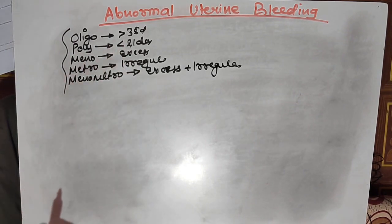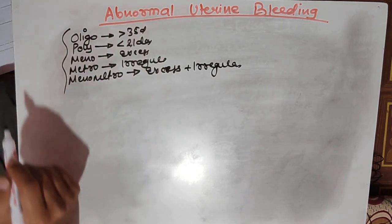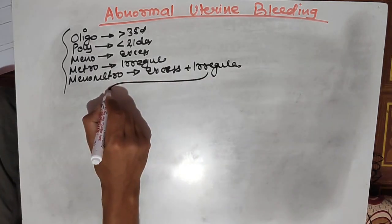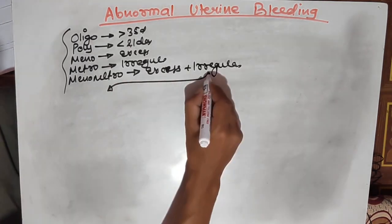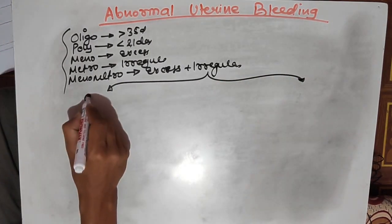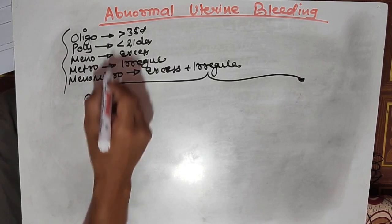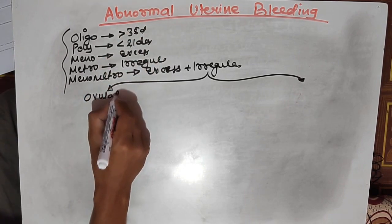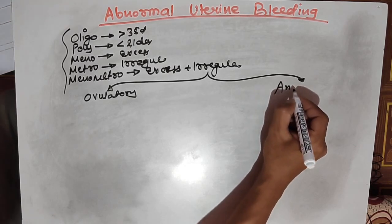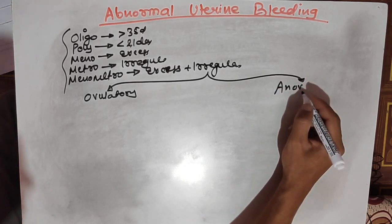Menometrorrhagia is excessive bleeding along with an irregular cycle. All of these come under AUB or abnormal uterine bleeding. To further classify AUB, we should differentiate it as ovulatory or anovulatory type, which we can determine by asking the patient whether the cycle is regular or irregular.